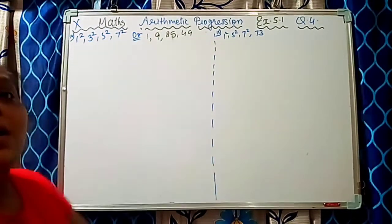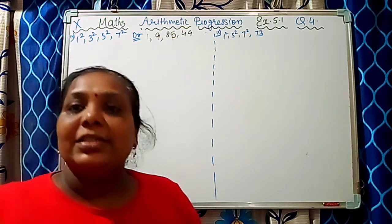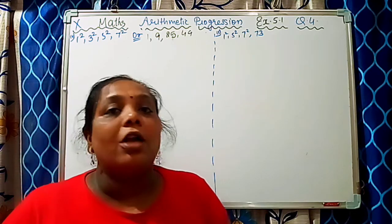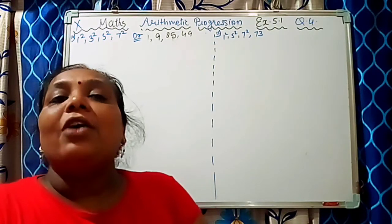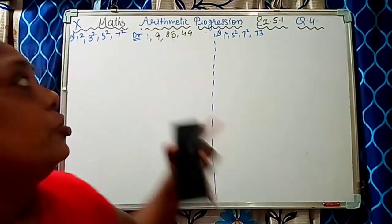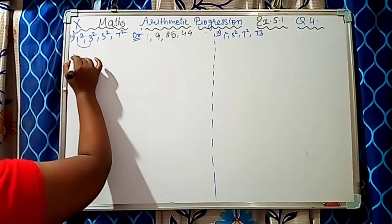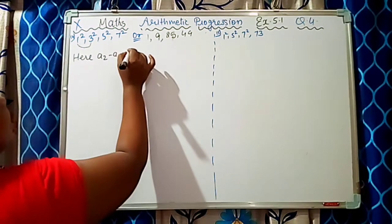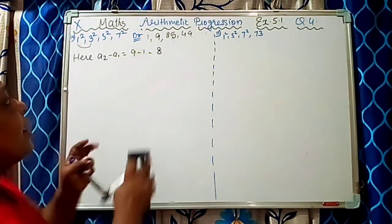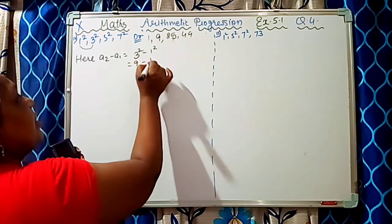Now we have to find out the common difference and we have to find three more terms, and we will see whether these form an AP or not. So while finding the common difference, from A2 minus A1: that is 9 minus 1 which equals 8. So 3² minus 1² is 9 minus 1, equal to 8.